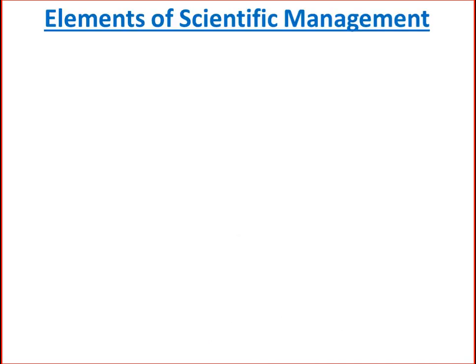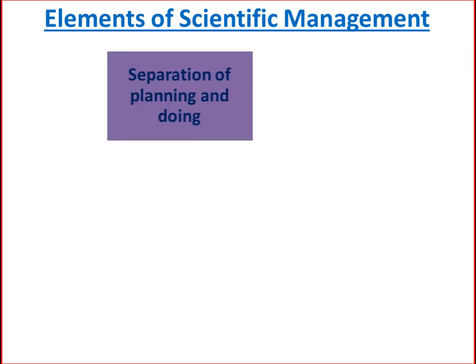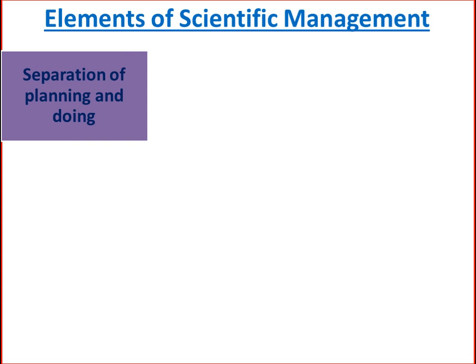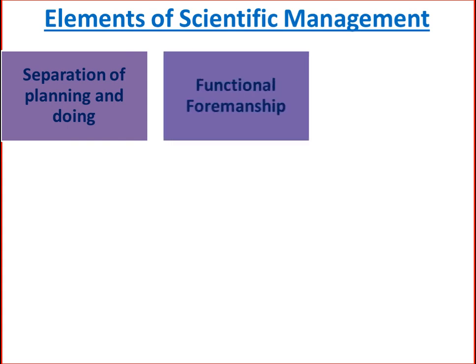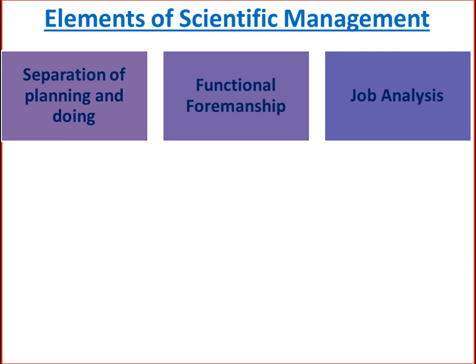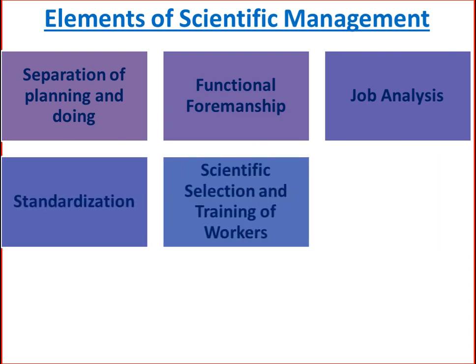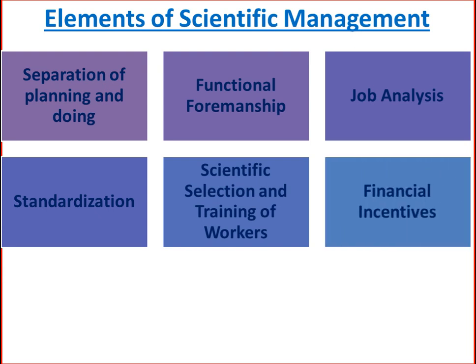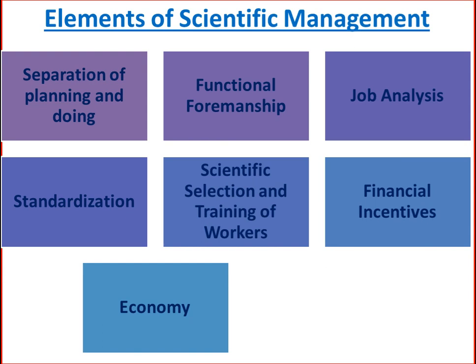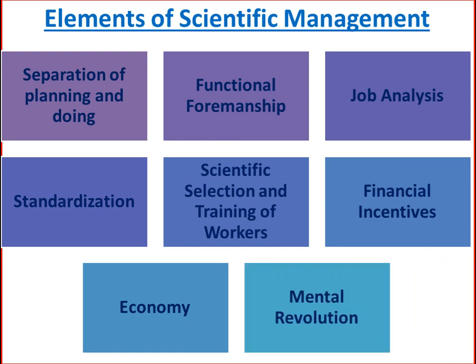The different elements of scientific management are: separation of planning and doing, functional foremanship, job analysis, standardization, scientific selection and training of workers, financial incentives, economy, and mental revolution.